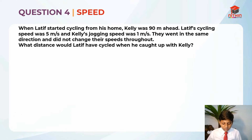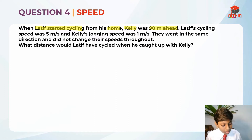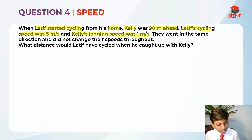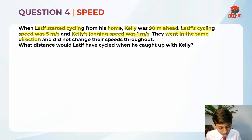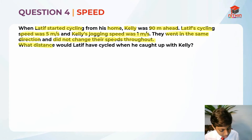So this question — I'll explain what they're actually asking us. When Latif started cycling from his home, Kelly was already 90m ahead. They're telling us Latif's cycling speed and Kelly's jogging speed was 1m per second. They went in the same direction — not the opposite direction — and they never changed their speeds throughout the journey. So Latif remained at 5m per second and Kelly remained at 1m per second throughout.